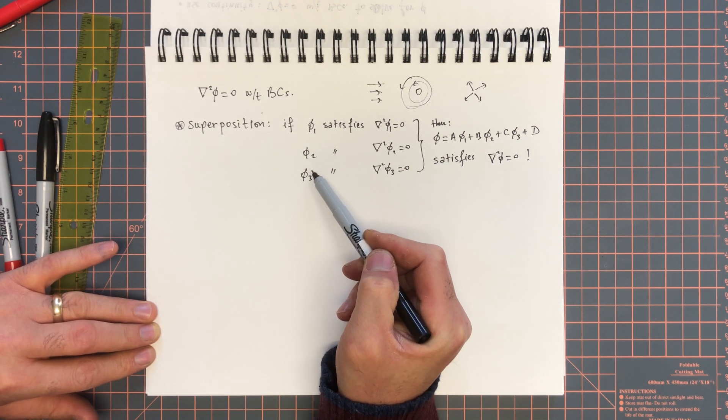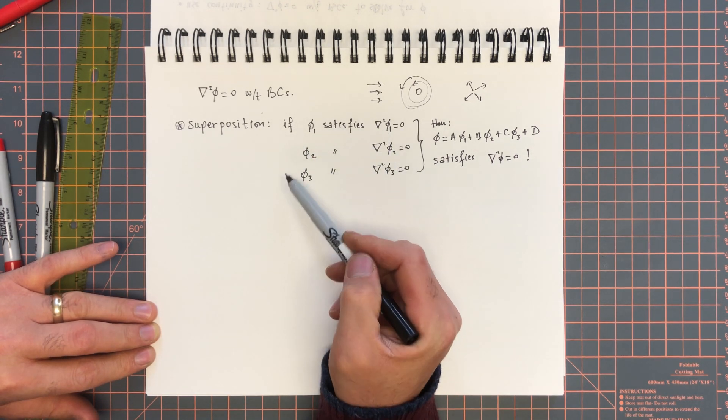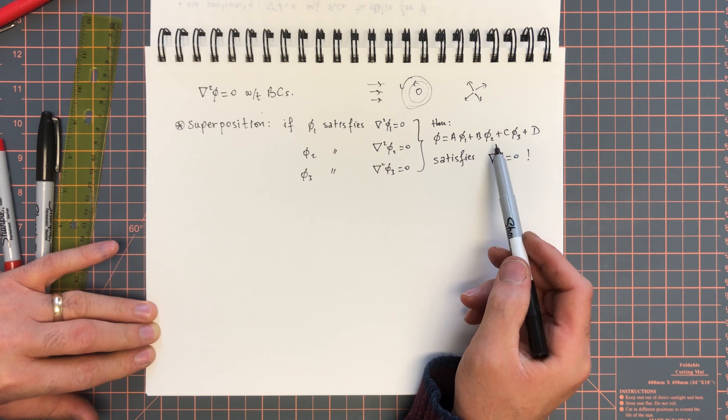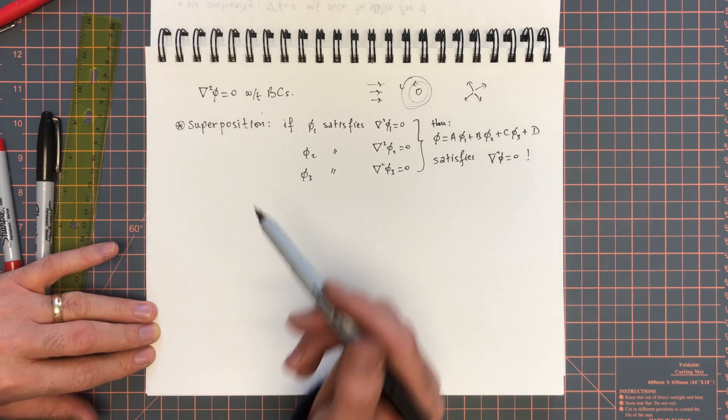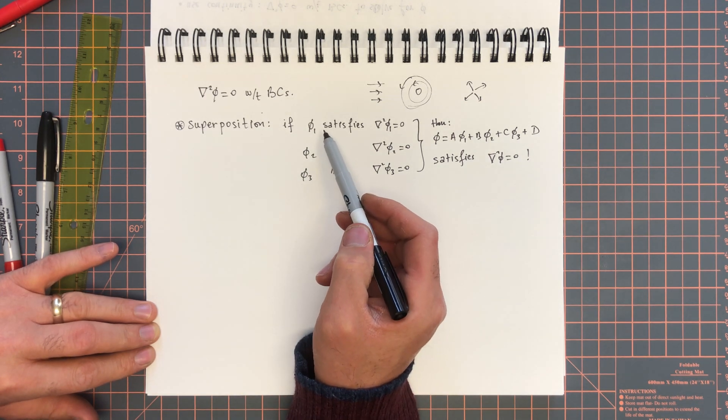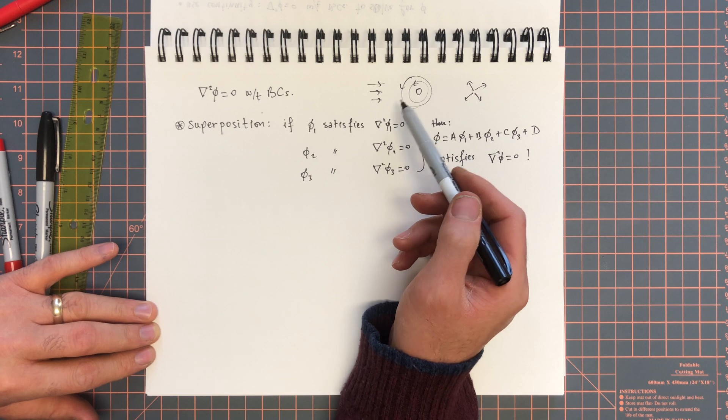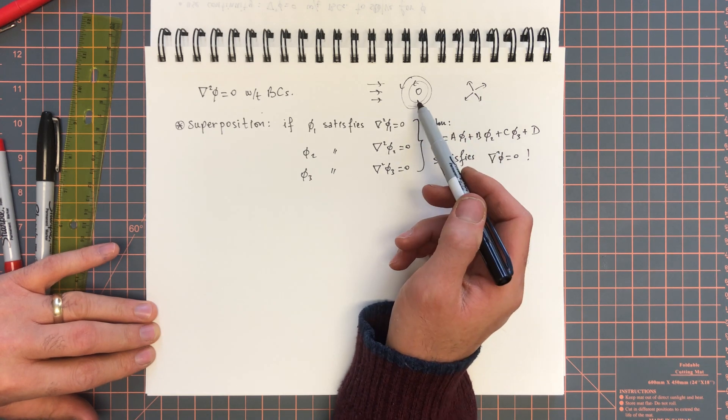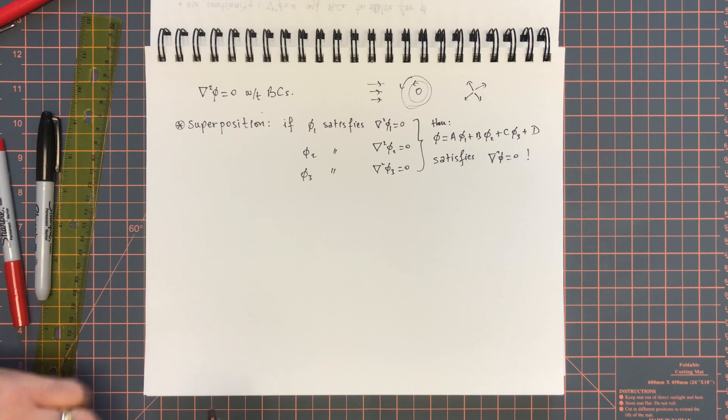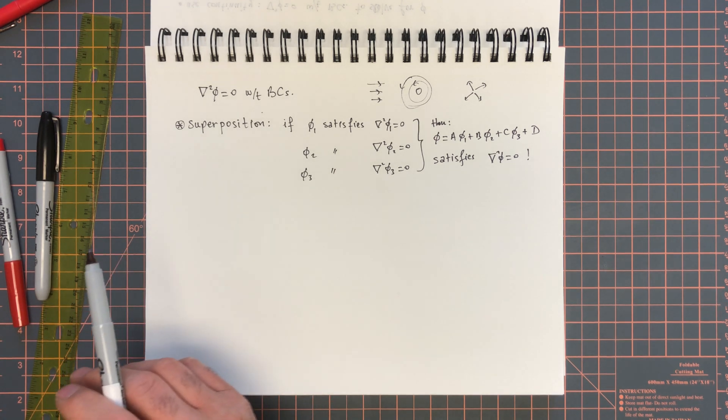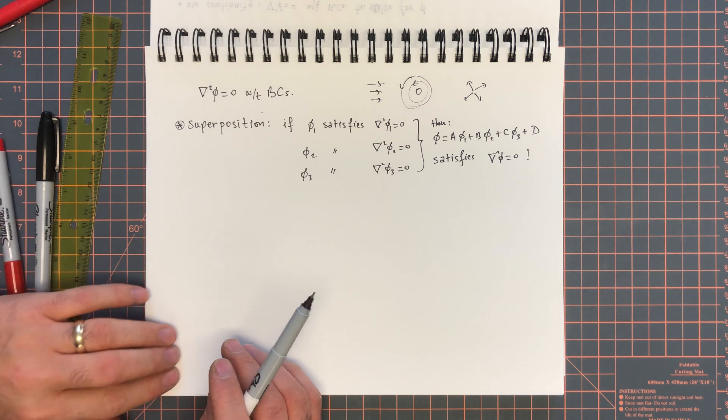In other words, if phi1, phi2, and phi3 are potential flow solutions, then their combination, any linear combination thereof, is also a potential flow solution. This is really great because this allows us to come up with a few building blocks like uniform flow, source flow, vortex flow, and then combine them in ways that will produce flows that could mimic realistic flows in principle. That's a very powerful principle for potential flow theory.